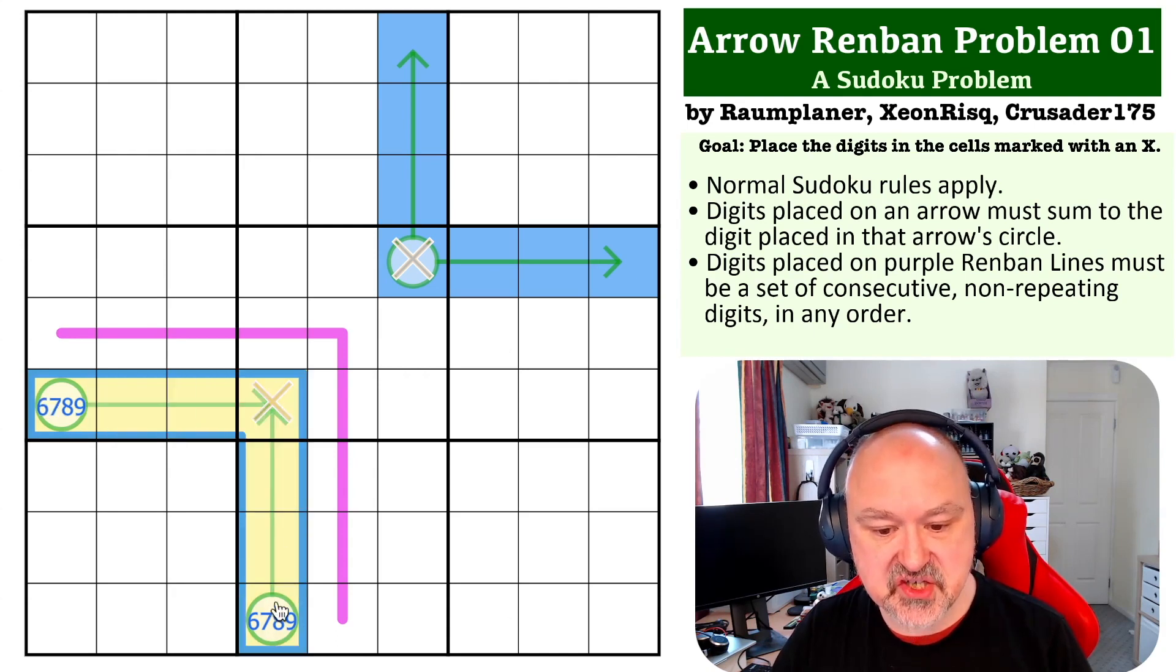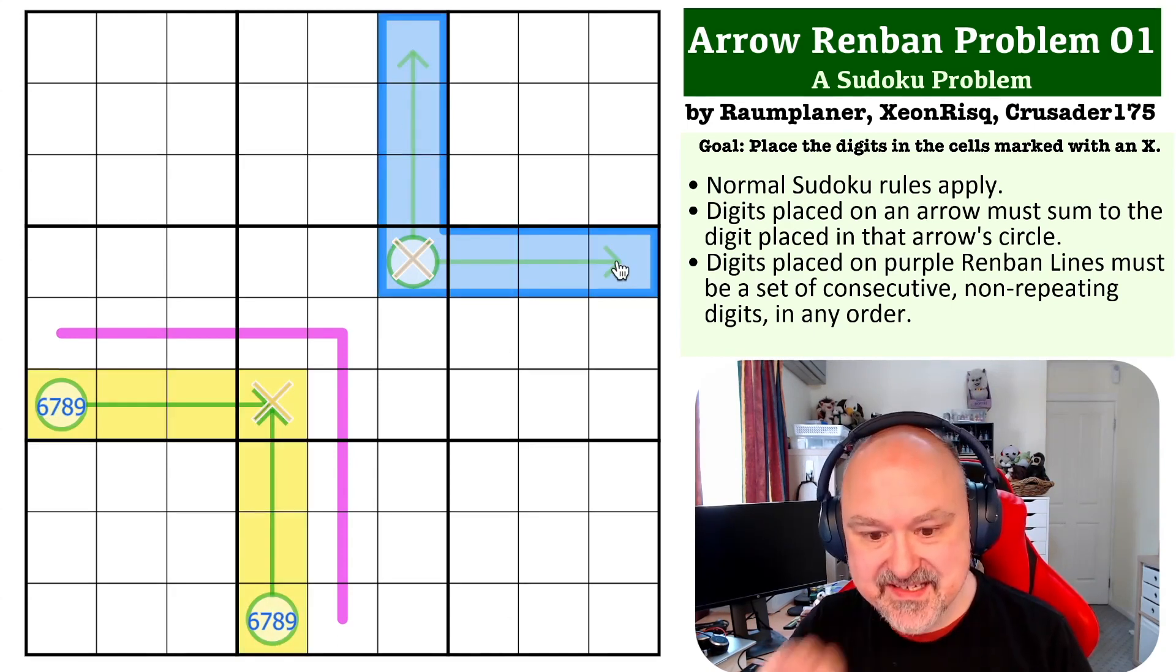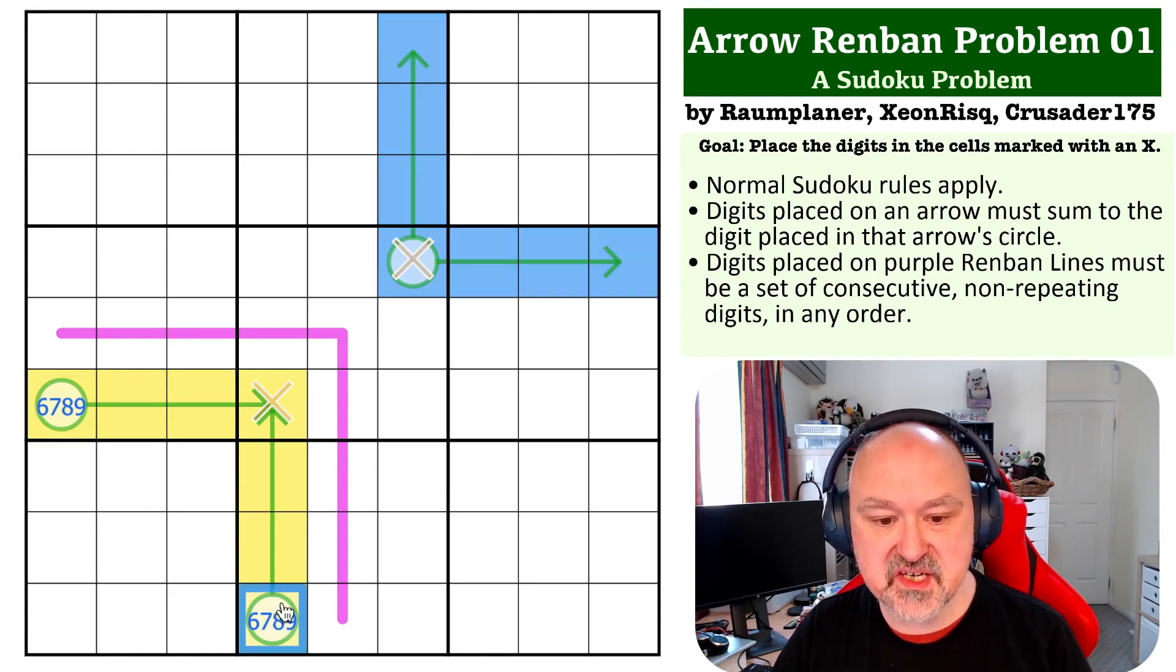But, these exact digits have to go up here. They must be an exact match. So, whatever the largest digit is must go into the arrow circle, because there is no other way of doing this. Because basically you cannot have a larger digit on an arrow than is in its circle. So, the largest digit in this is going to be in the circle. Now, then we need to think about, what of the other digits from six, seven, eight, and nine can go on the arrow?